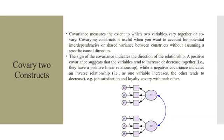Covariance measures the extent to which two variables vary together. Covarying constructs is useful when you want to account for the potential interdependencies or shared variance between constructs without assuming a specific causal direction. So there is no cause and effect here. The sign of the covariance indicates the direction of the relationship. A positive covariance suggests that the variables tend to increase or decrease together, i.e., they have a positive linear relationship, while a negative covariance indicates an inverse relationship, i.e., one variable increases, the other tends to decrease. For example, job satisfaction and loyalty covary with each other.